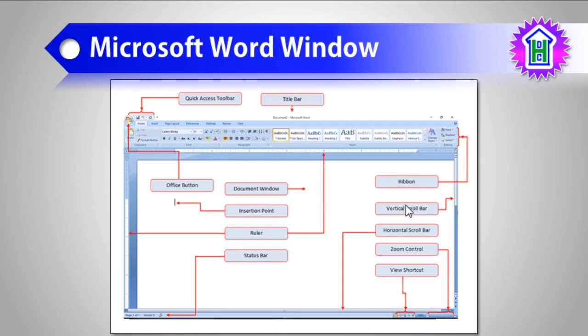Then we have the scroll bars. We have two scroll bars, just like we have two rulers — horizontal and vertical. This is the horizontal scroll bar and this is the vertical scroll bar. You can follow my mouse. If I have a document which is so big that it doesn't fit within a single window, both horizontally and vertically, I can scroll to see the other part of the document using these scroll bars.